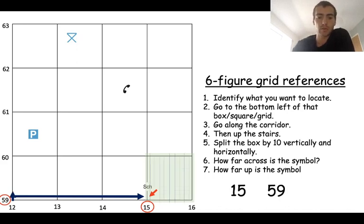And we then split this grid by 10 vertically and 10 horizontally. You can see how far across is it. It doesn't go across at all. So we put a zero there, 150. And it's about three up. So it's 593. So that is how you do six-figure grid references.